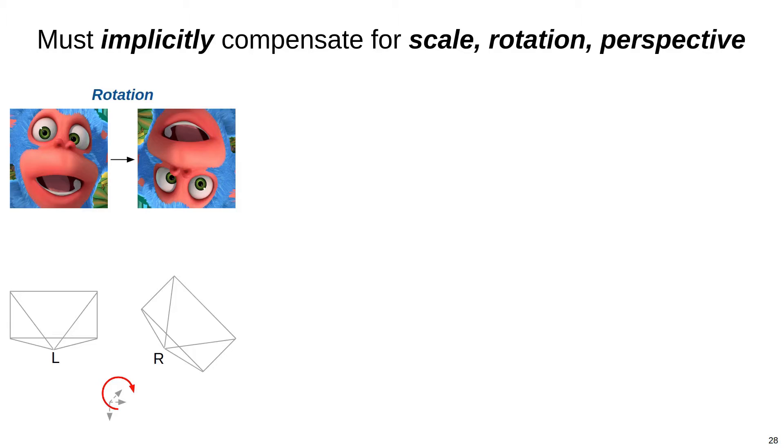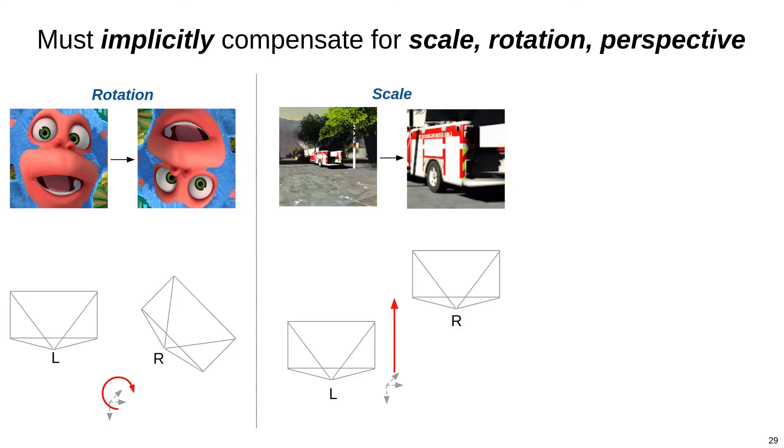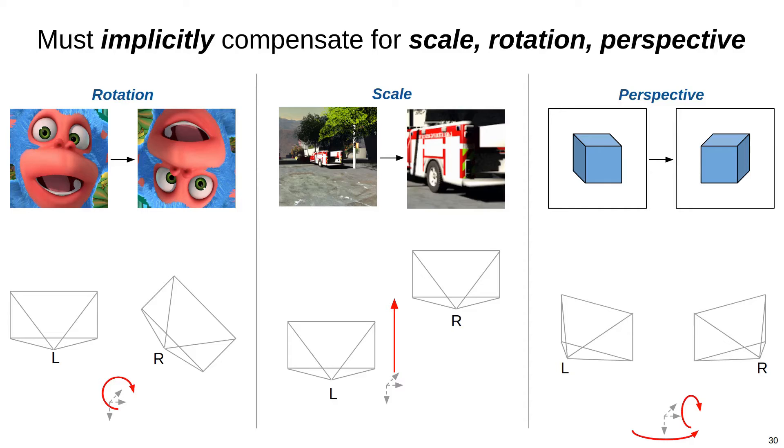There are several types of warps that can affect images in an MVS setting. The simplest is rotation, where the second camera is rotated along its optical axis relative to the reference camera. There's also scale transformations, where the second camera is translated along the optical axis of the first camera. Finally, there are general perspective transforms that occur when the second camera is yawed or pitched relative to the first camera. Again, projecting the features after extraction means that the feature network must implicitly compensate for all the scale, rotation, and perspective changes.